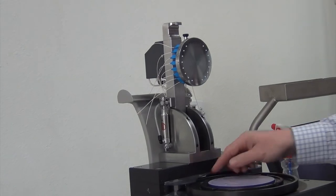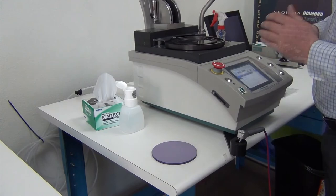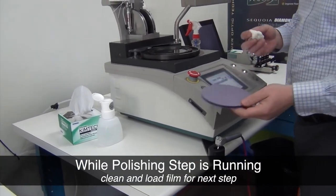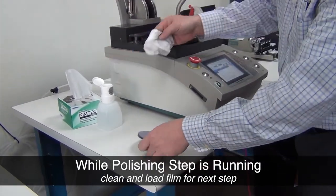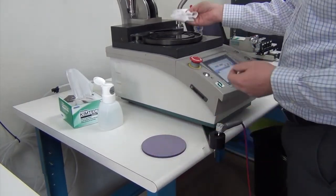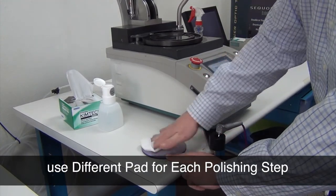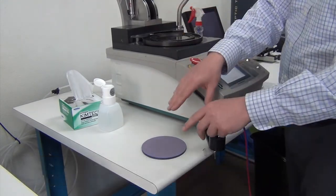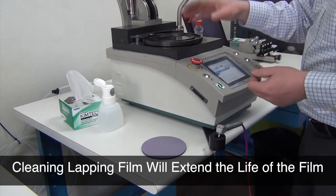This plate is now ready for the next pass. If this was the first or second pass of the process, you would take this film off, or in a production environment, you would have another pad with the next film loaded, and we would just place it on and start the next process.